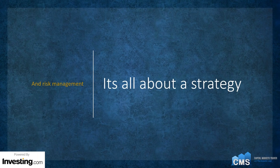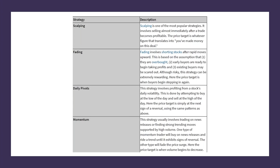It all comes down to the strategy. There are several main strategies that fit day traders. We have scalping, fading, daily pivots, and momentum. Scalping is one of the most popular strategies — it's about selling almost immediately after a trade becomes profitable. You're looking for lots of small, profitable trades: you enter a market, when it pips up, you sell. You're not looking for it to make you 200 pips; as soon as it makes you money, you sell.